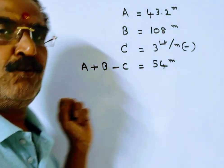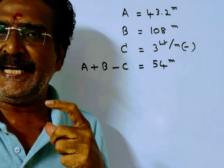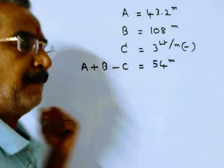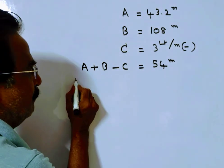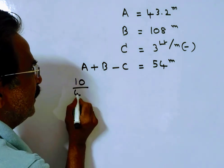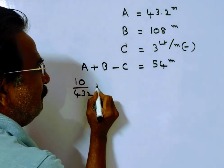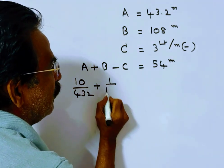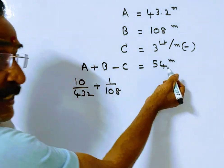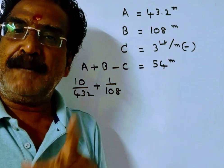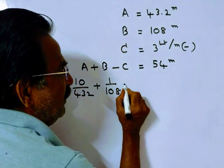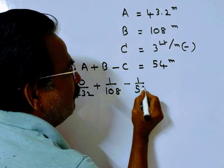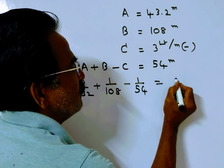A is 43.2 means 432 by 10, so the work done by pipe A is 10 by 432, plus the work done by pipe B, 1 by 108, minus the work done by all three pipes together, 1 by 54, is equal to C.